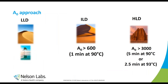With the A₀ approach, low level disinfection is essentially a mirage — just don't go there. For intermediate level disinfection, specifically when protecting healthcare users moving devices to sterilization, you need an A₀ value above 600, generally achieved at 90°C for one minute. For high level disinfection, the A₀ method must be above 3000 — five minutes at 90°C or two and a half minutes at 93°C. In Germany, they always want A₀ above 3000.